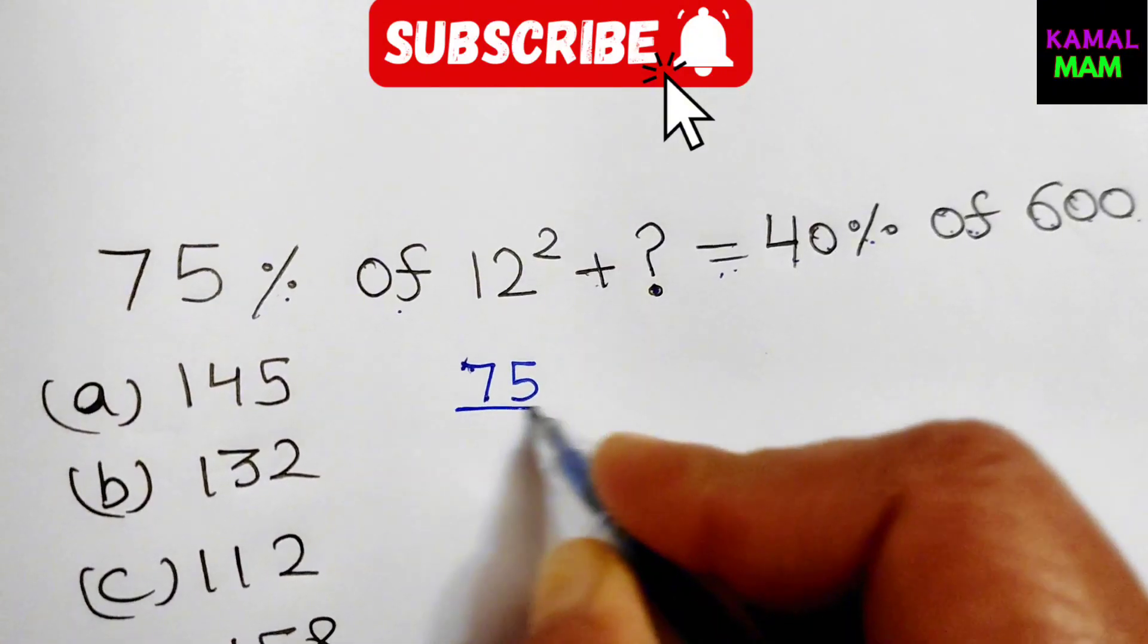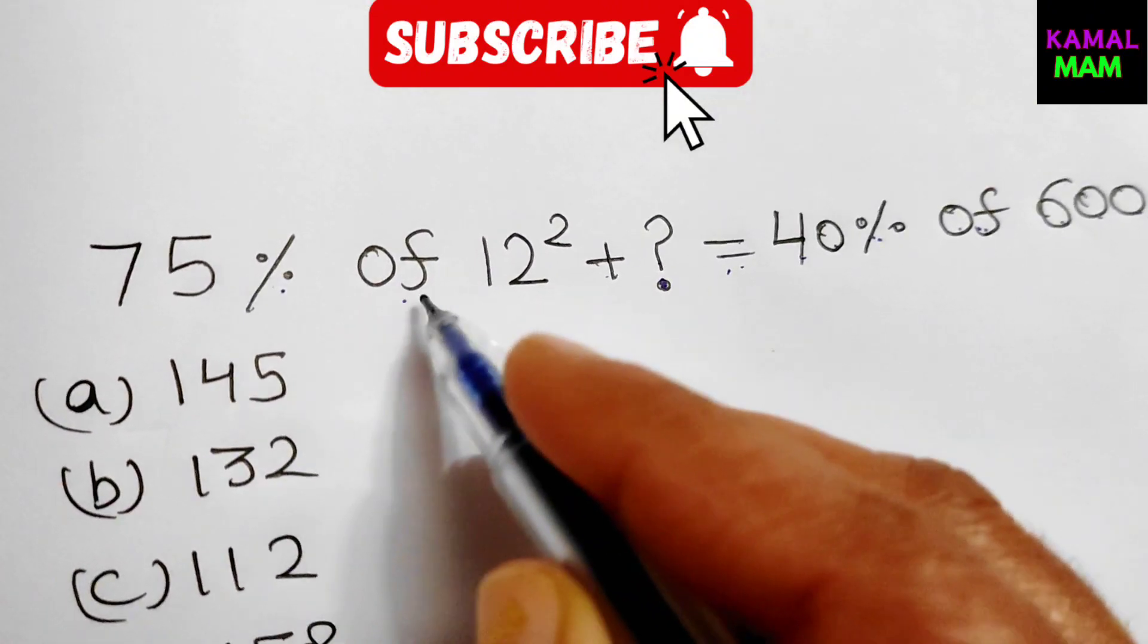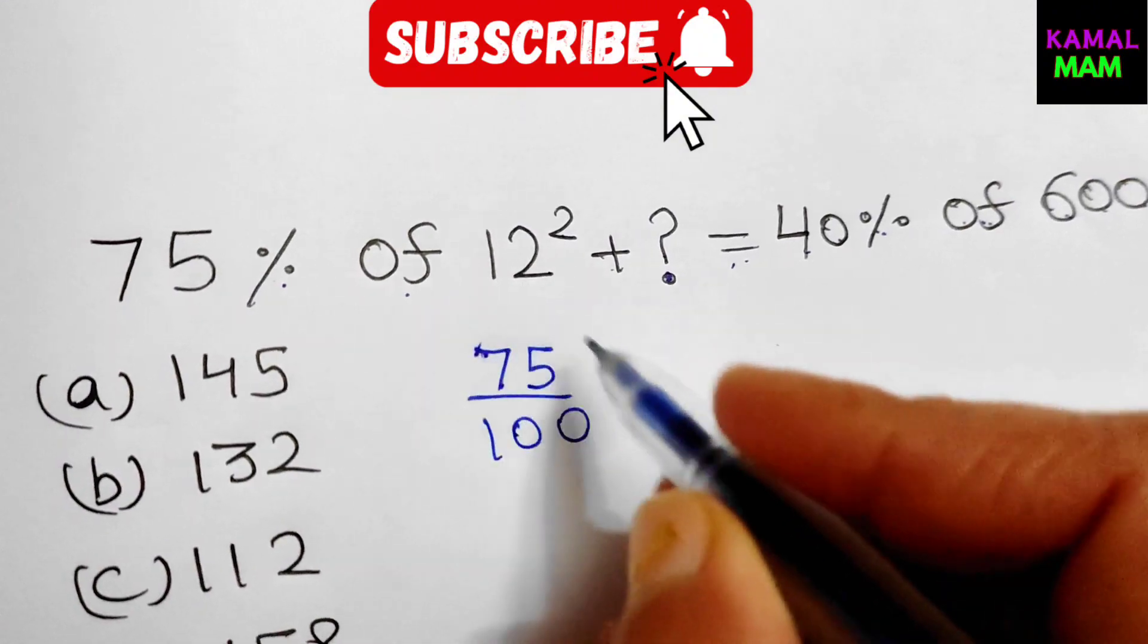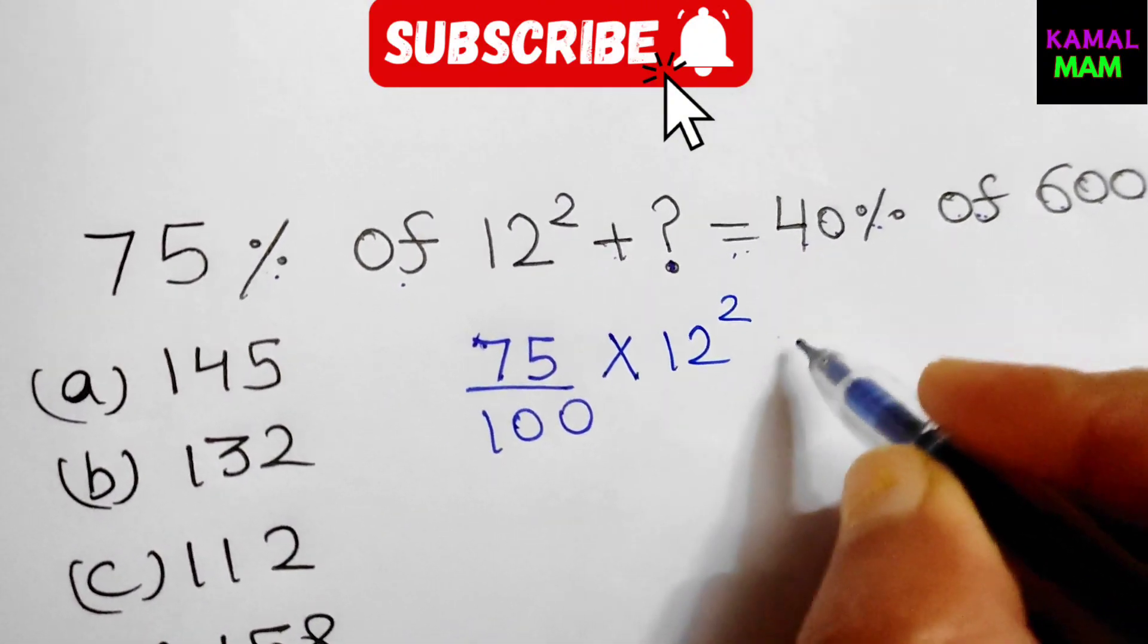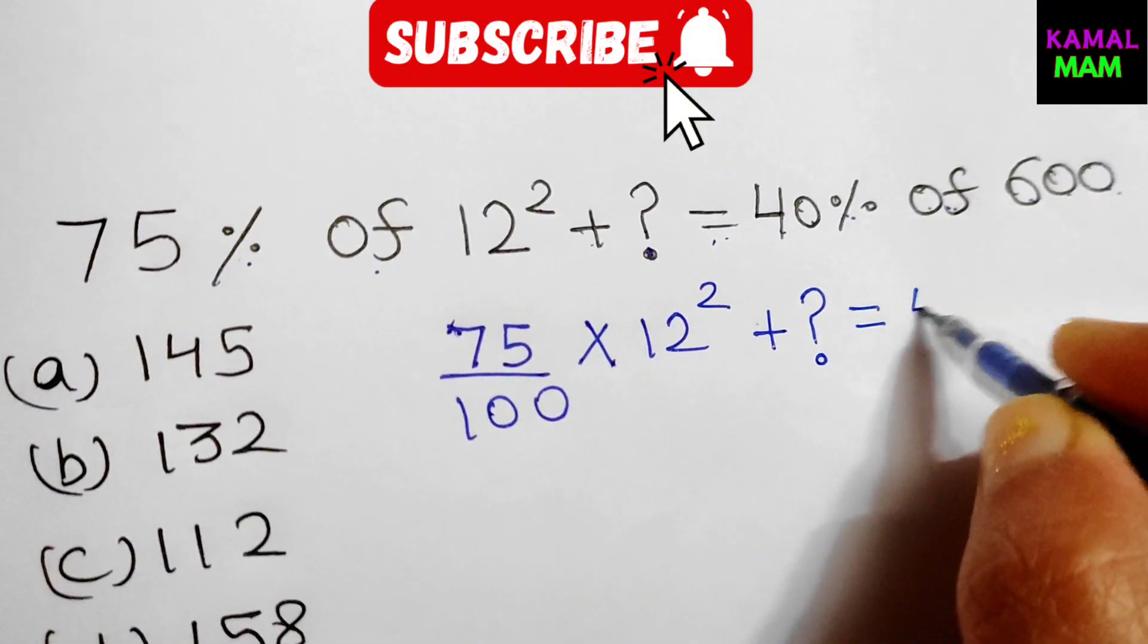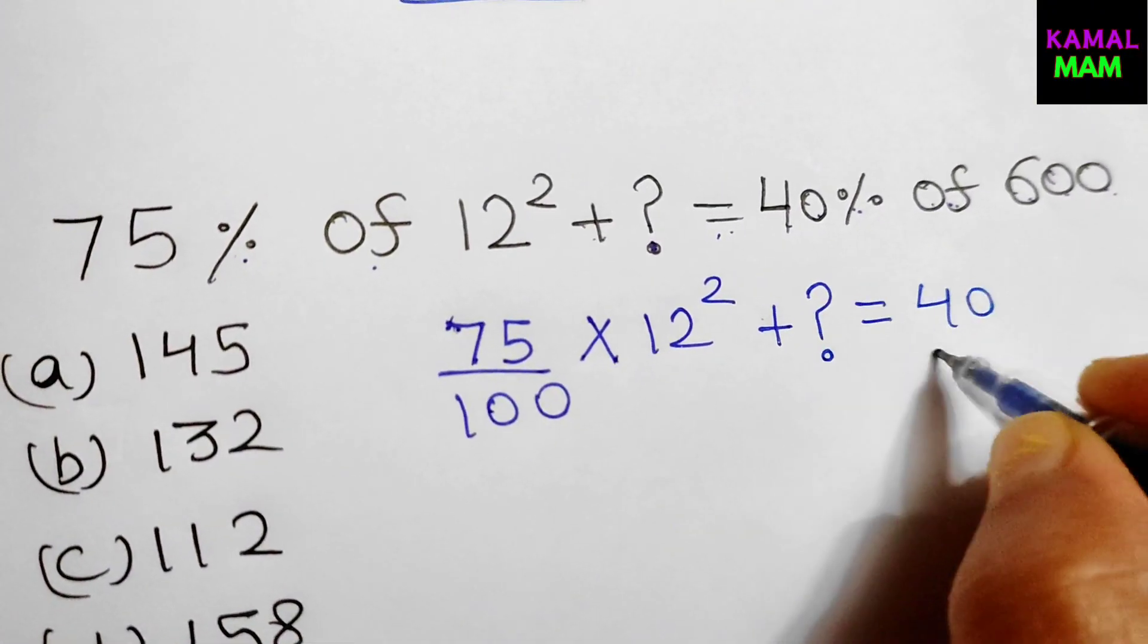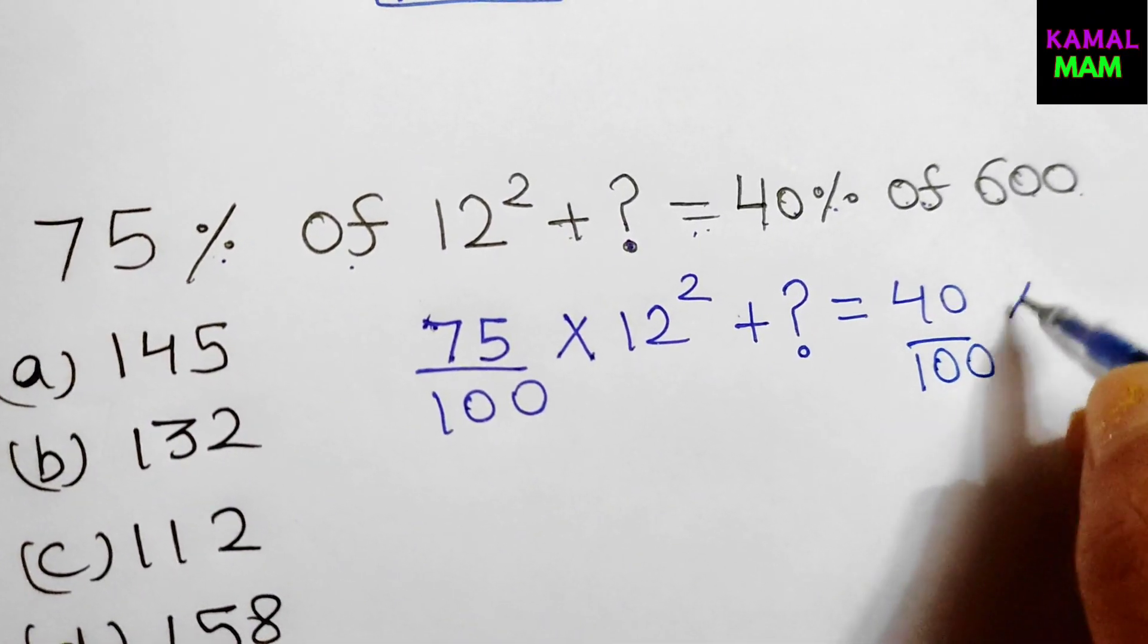75 divided by 100. We can change the statement into the equation here. Off changes into multiplication. It's 12 whole square plus question mark equals 40 percent, which will change into division by 100. Off changes into multiplication, 600.